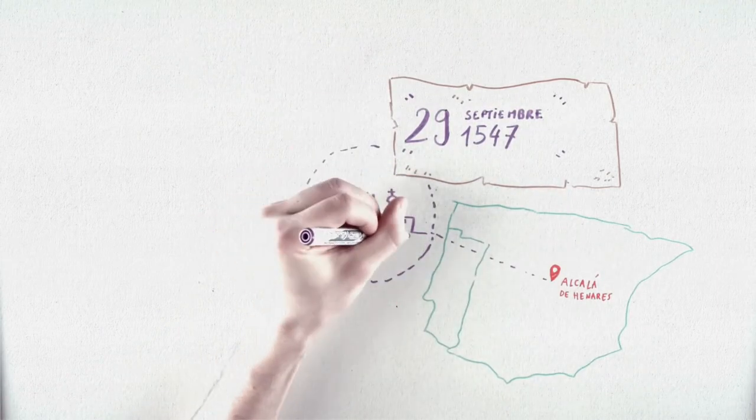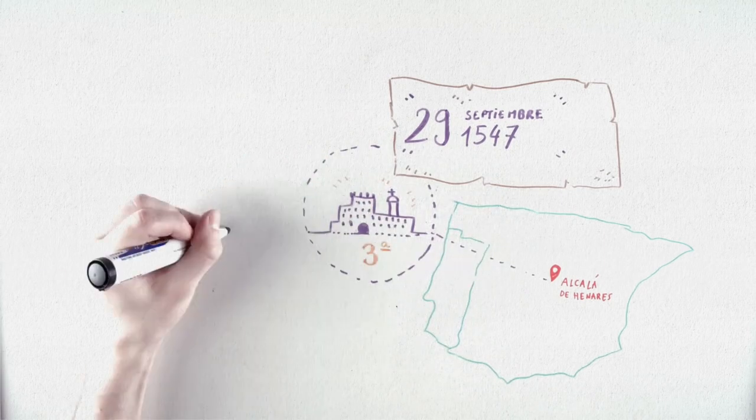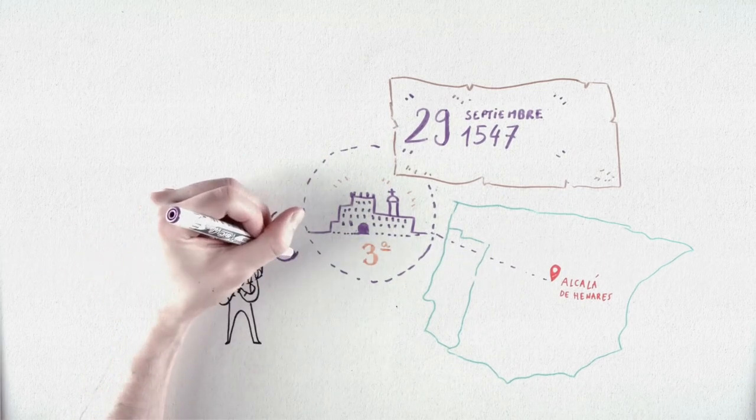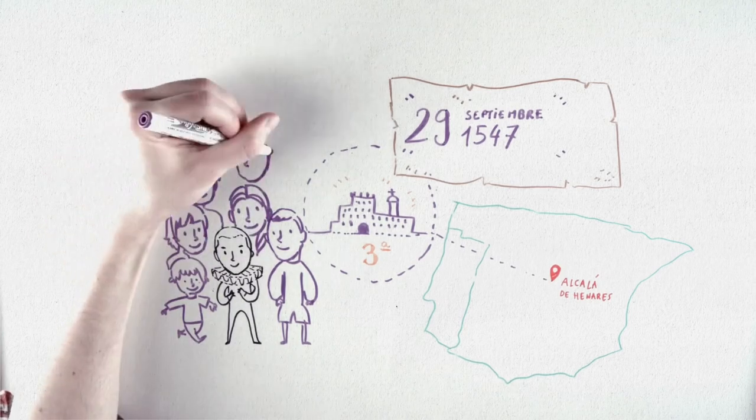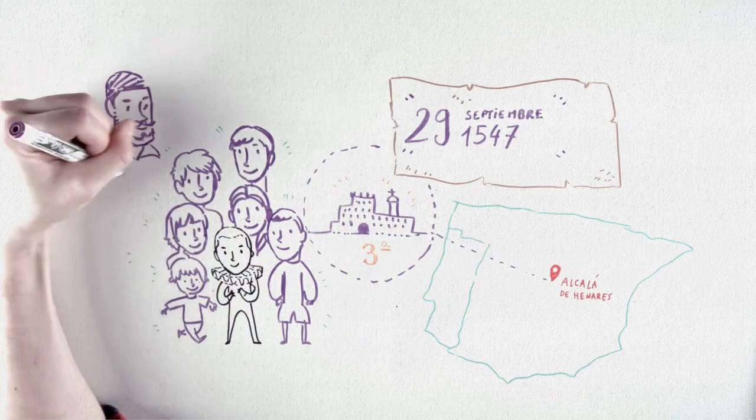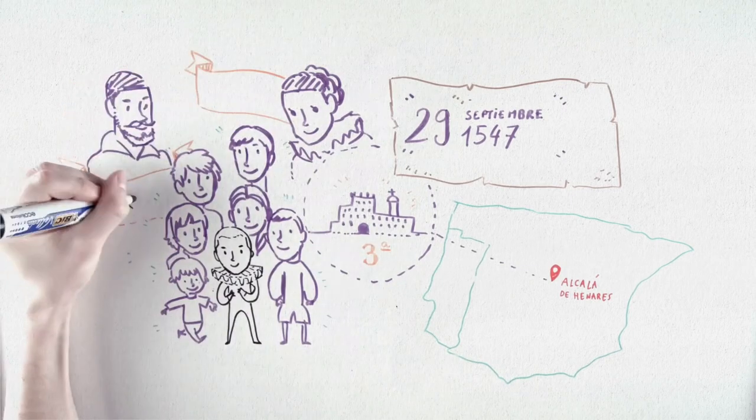in Alcalá de Henares, the place where the third Spanish university had been founded in 1508. Miguel would be the sixth of the seven children that Rodrigo de Cervantes Saavedra and Leonor de Cortinas had.